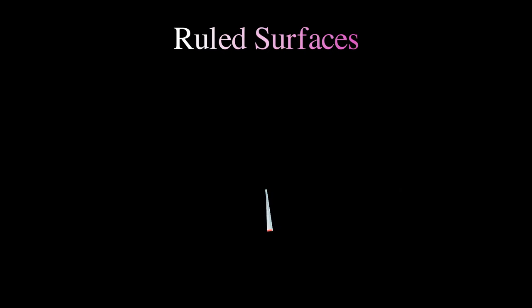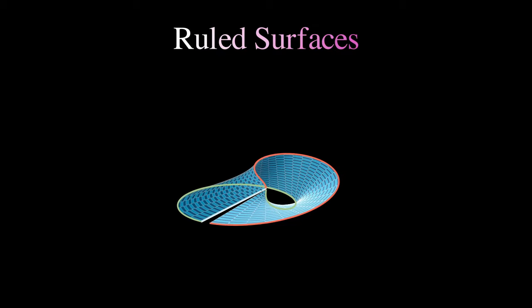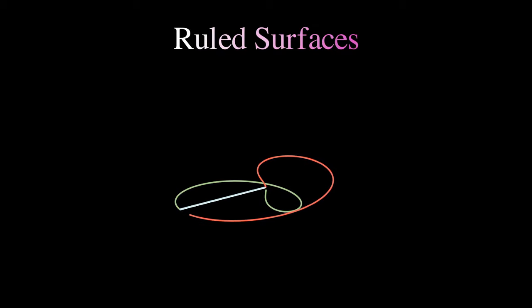A topologist's example of a ruled surface might be a Mobius strip. See, a Mobius strip can be formed by waving a line around in a circle while you turn the line 180 degrees as it's moving.